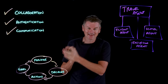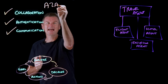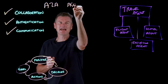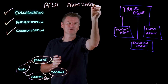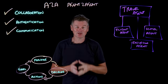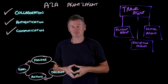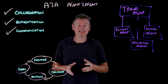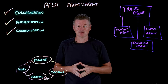That is what the A2A protocol — also known as the agent-to-agent protocol — was designed to do. It was initially introduced by Google in April 2025, and A2A is now open source, housed by the Linux Foundation.